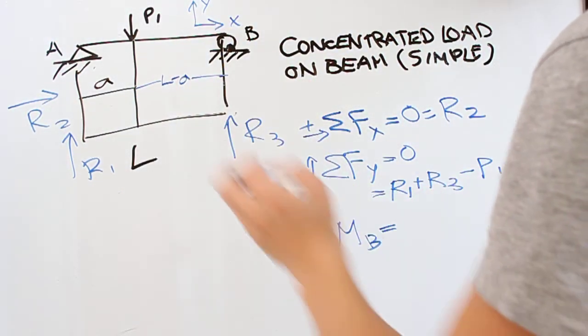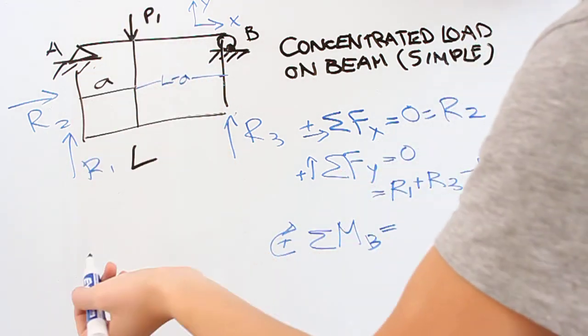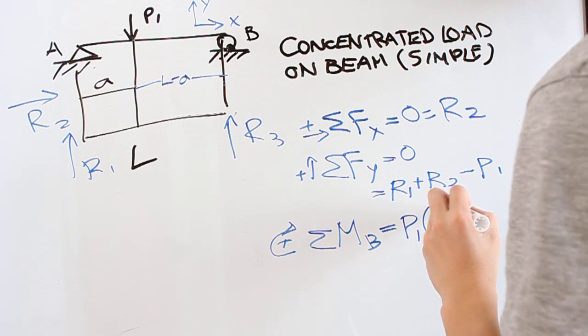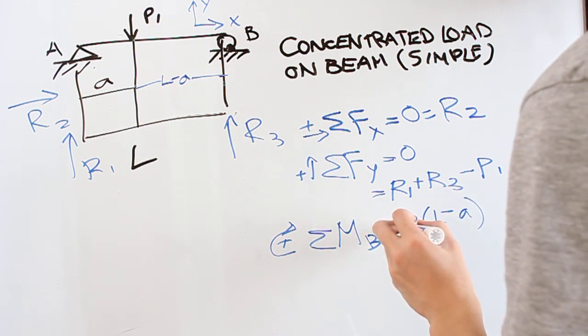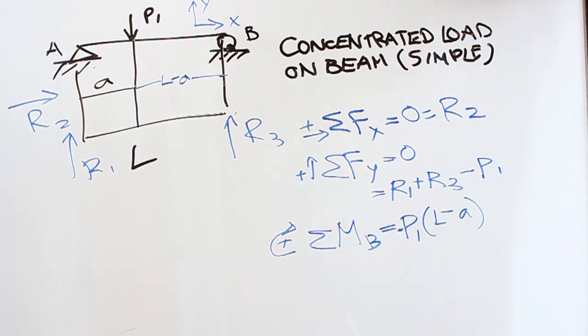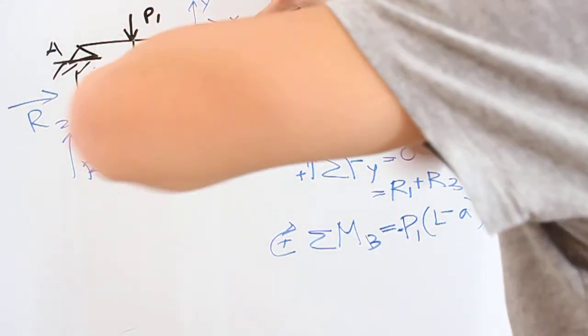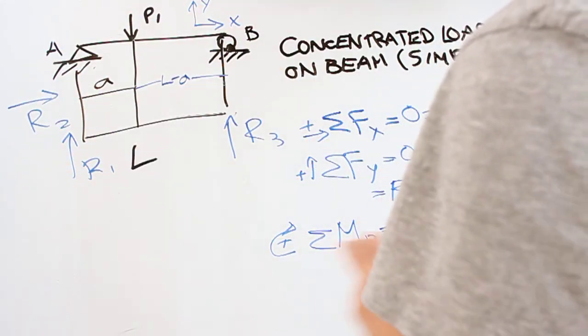So this is going to be negative in our equation. So you write P1 times the distance, put a negative sign right there. And then we're going to look at R1. Now, R1 is positive in our sense, and it's at a distance L.